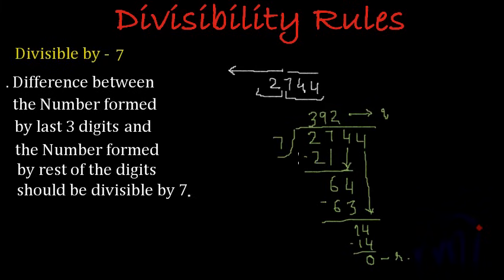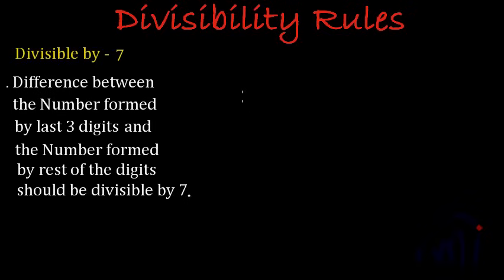Our rule of divisibility holds good. Now let's take one more bigger number and check its divisibility. The number is 311,500. If we look at the last three digits, it is 500, and the rest of the number is 311.